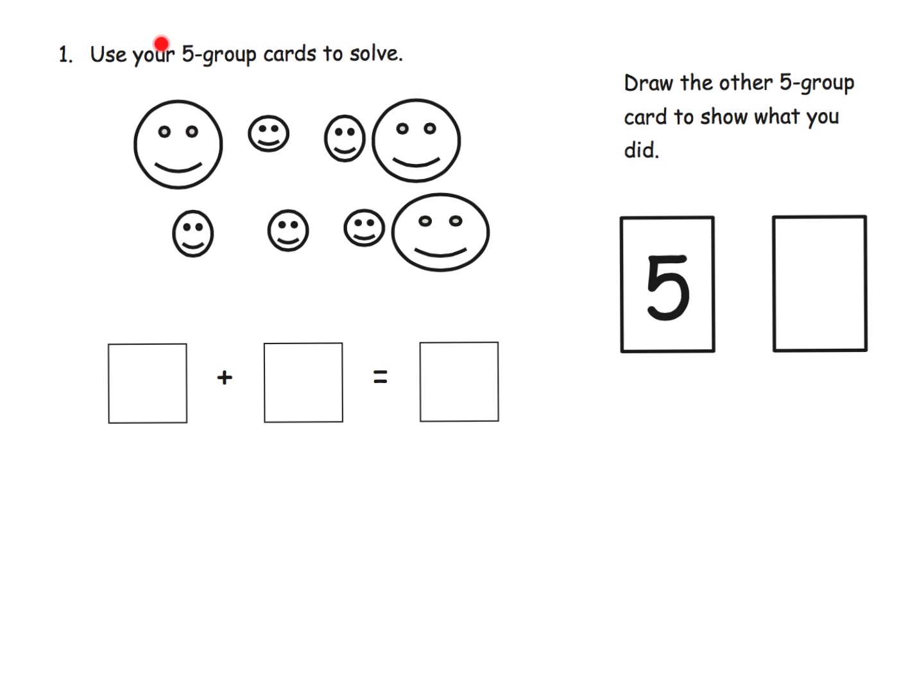So here it says, use your five group cards to solve. We've got these faces, and one thing we can do is say, we notice that some of the faces are large and some are small, and those are going to be the parts, and the total number of faces is going to be the whole. So we can see that we've got five small faces, three big faces for a total of eight.